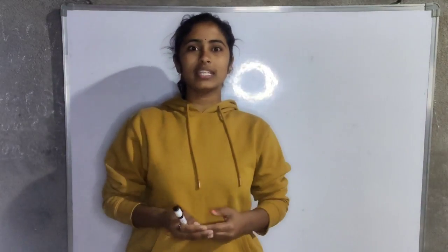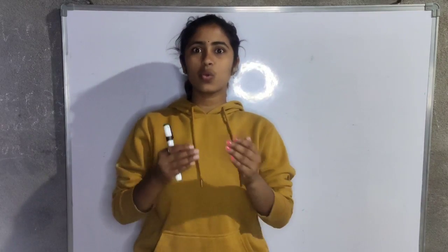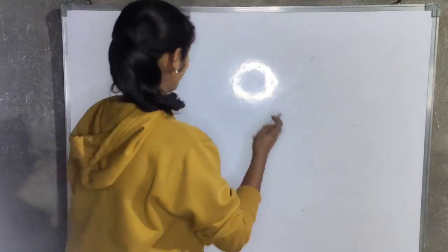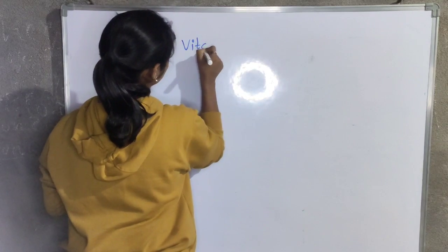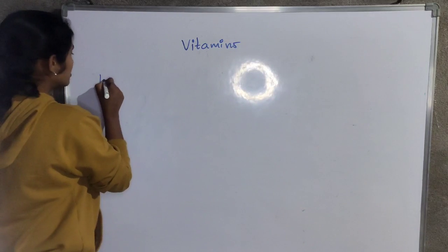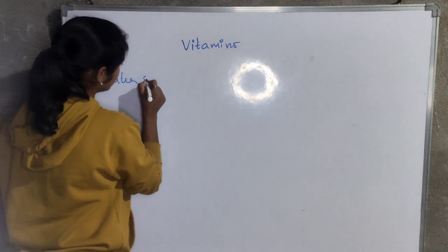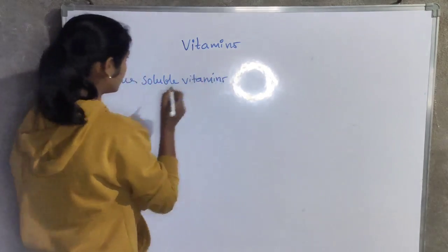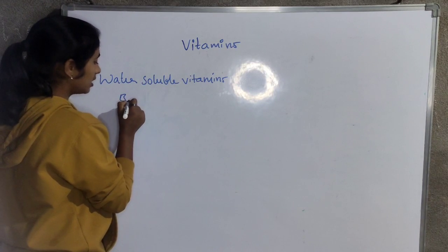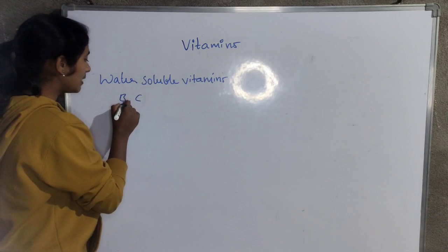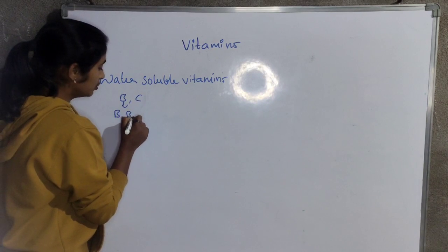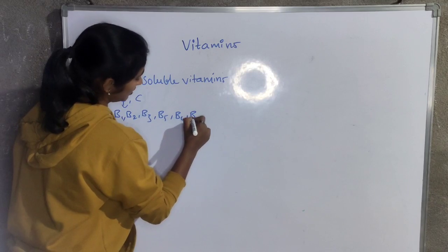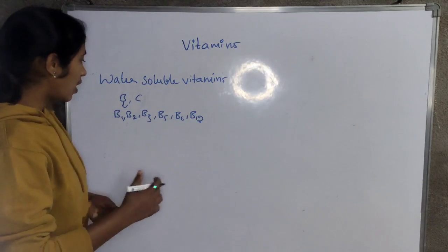Hi, hello guys, welcome back to Honey GS classes. In my last two classes, we covered fat-soluble vitamins, so now let's see about water-soluble vitamins. Water-soluble vitamins are of two types: first, B complex vitamins, and next, vitamin C. B complex includes B1, B2, B3, B5, B6, and B12.